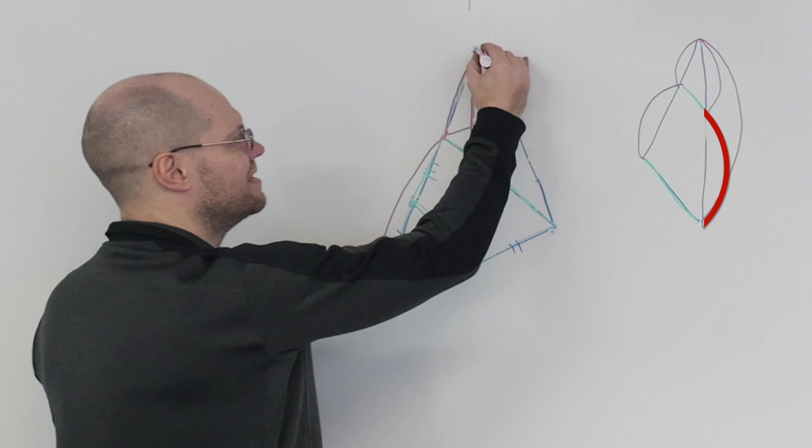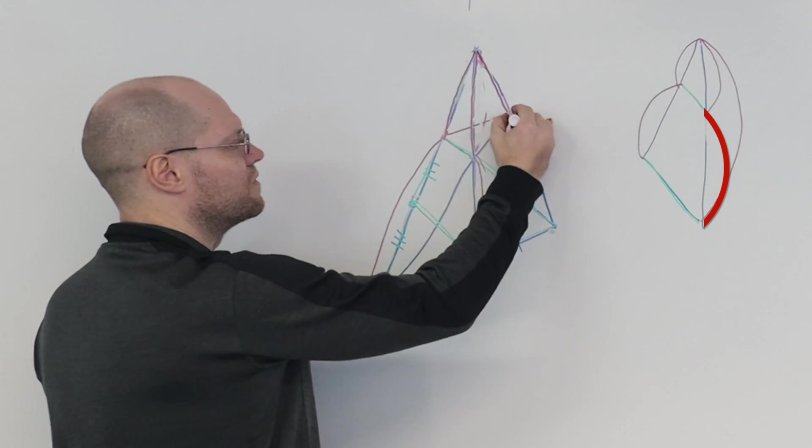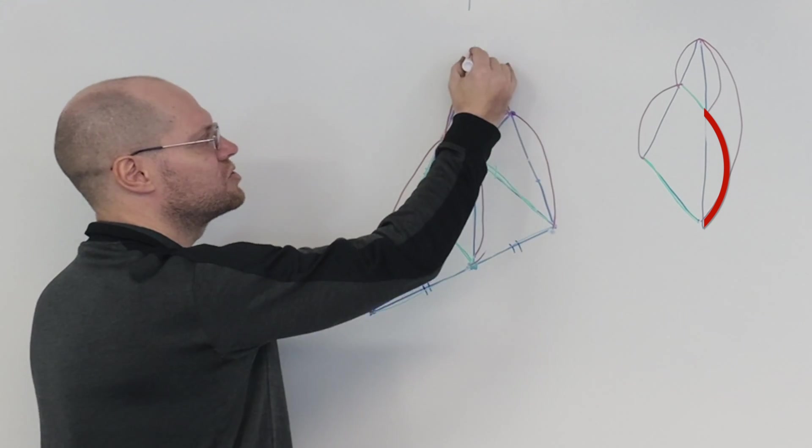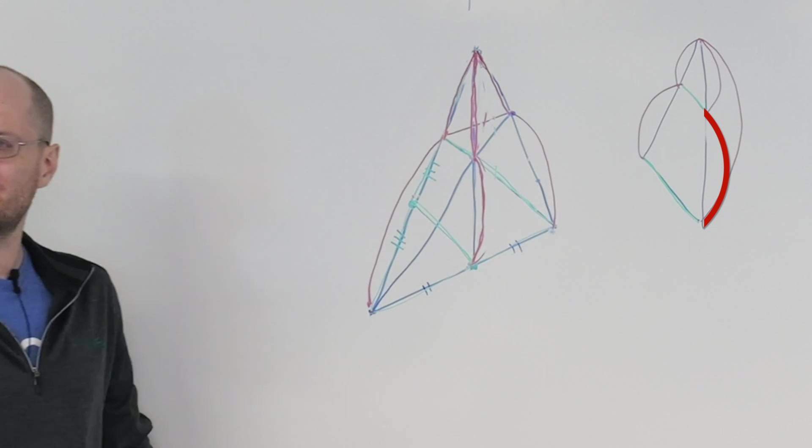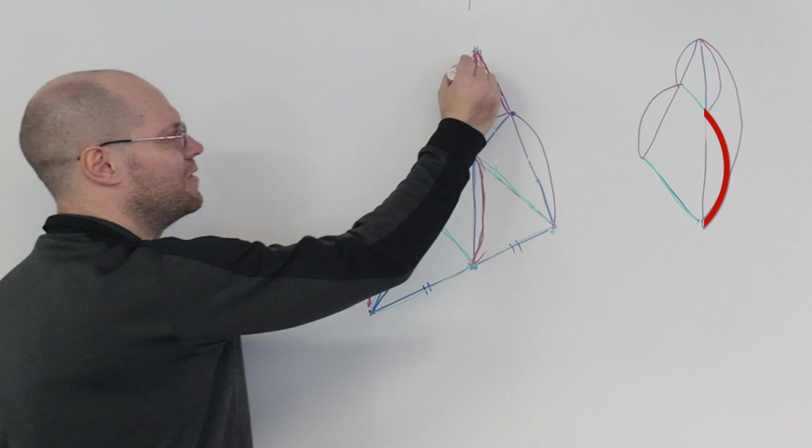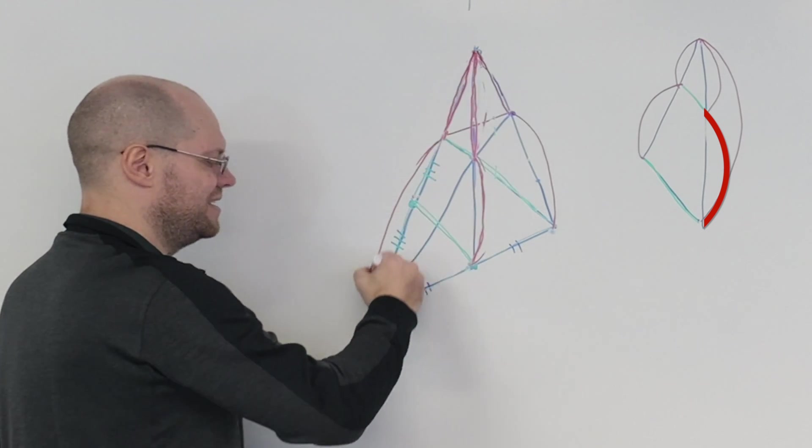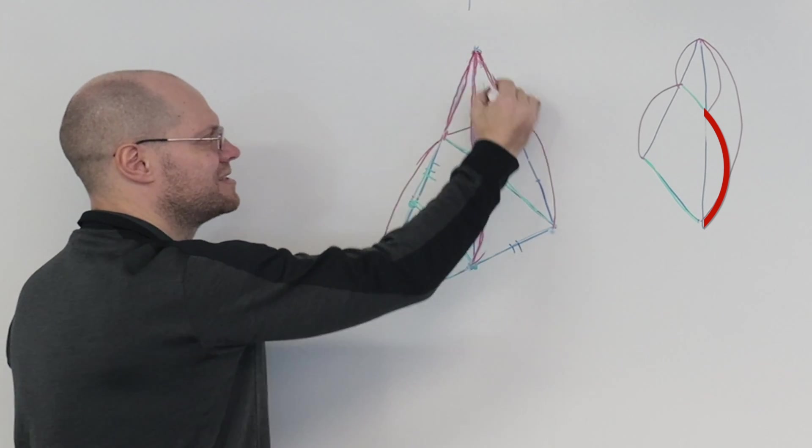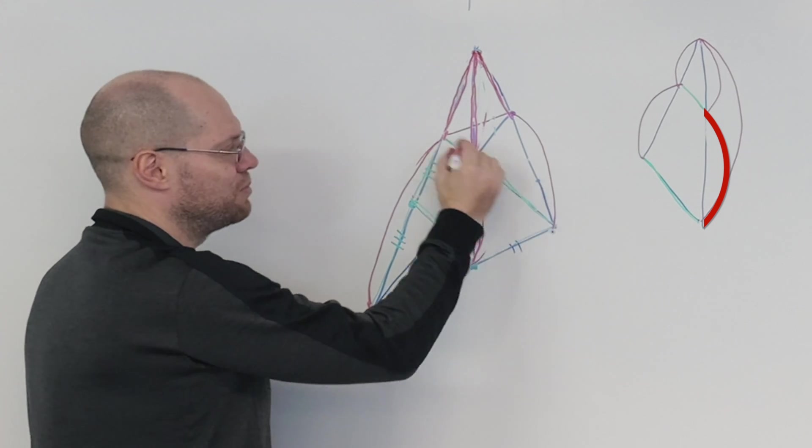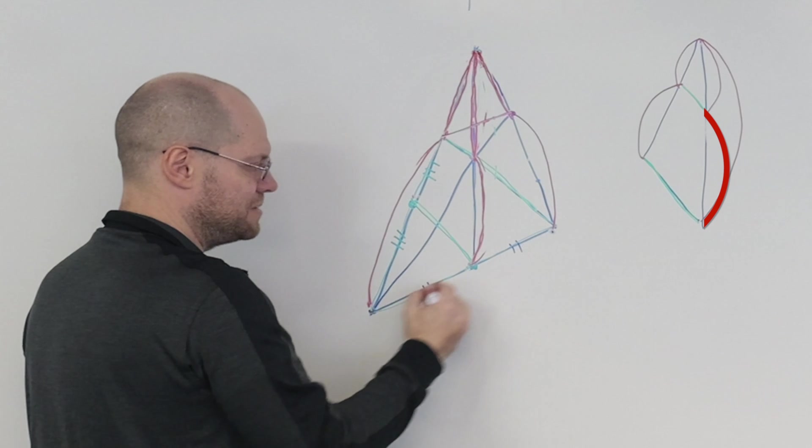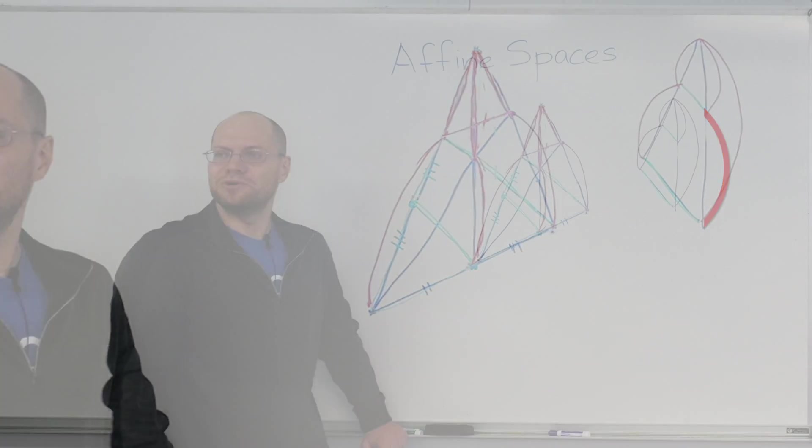But the exact same argument, this over this, is also half of this over this. It's the same argument, but on the other side. Therefore, this over this equals this over this. And because we have this proportion, this line must be parallel to the base. QED.